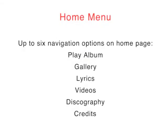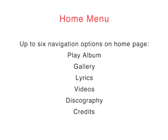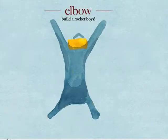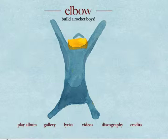Each standard iTunes LP product will contain a homepage and a further six areas. These are: Play Album, Gallery, Lyrics, Videos, Discography and Credits. Let's break down these six areas a little more.